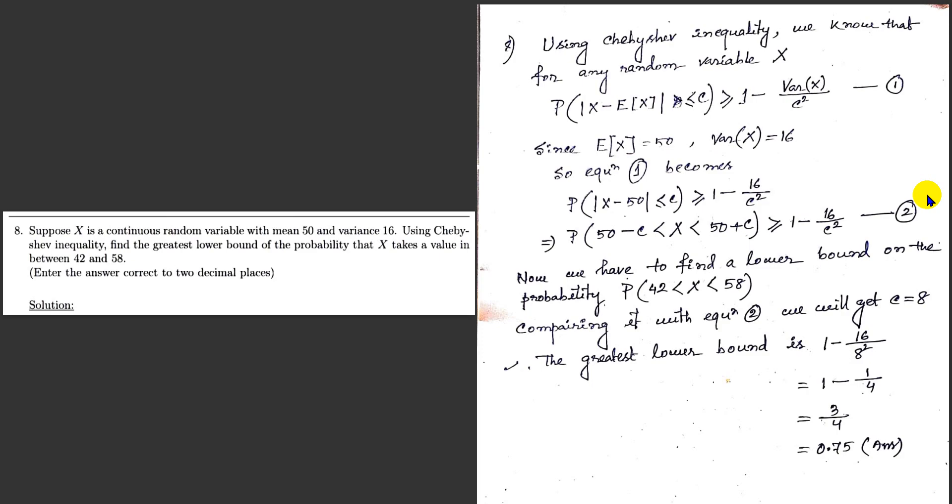Here is question number 8. Suppose X is a continuous random variable with mean 50 and variance 16. Using Chebyshev inequality, find the greatest lower bound of the probability that X takes a value between 42 and 58.